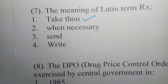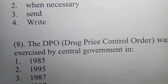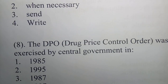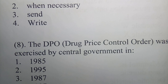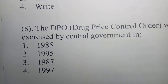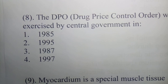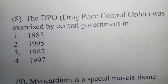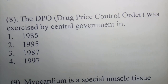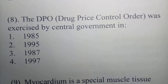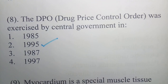Question 8: The Drug Price Control Order (DPCO) was exercised by the central government in which year? Options are 1985, 1995, 1987, and 1997. The correct answer is option 2 - 1995. The Drug Price Control Order was exercised by the central government in 1995.